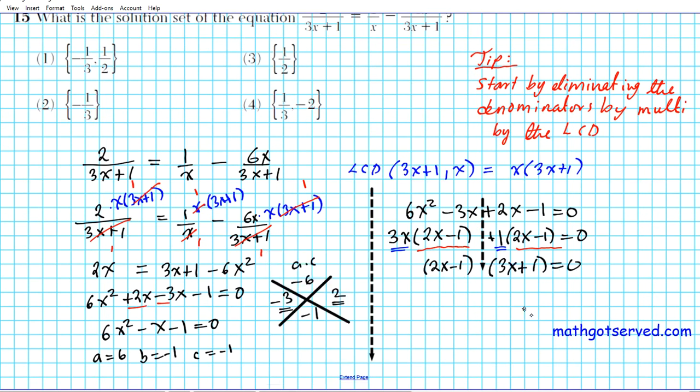To finish, we're going to use the zero product property or the ZPP. 2x minus 1 equals 0, set both factors to 0. For the first one, you can add 1 to both sides, you have 2x equals 1, divide by 2, and then you have x equals 1/2 as a first solution.